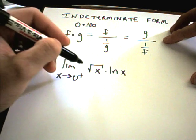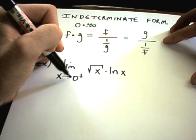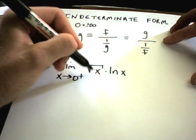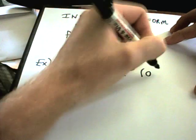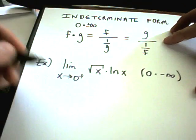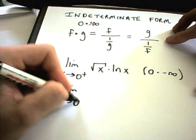So in this case, I've got the limit as x approaches 0 from the right of square root of x times ln of x. Notice as x approaches 0 from the right, square root of x is going to be 0. ln of x though approaches negative infinity. So I have this indeterminate form. And I've got two choices.